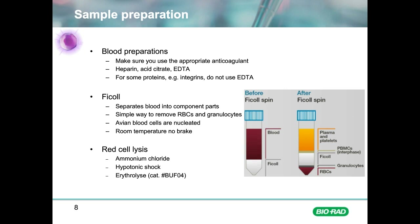The blood is diluted one-to-one with either PBS or RPMI and slowly layered on top of the Ficoll. This is then centrifuged to separate the different fractions. The red blood cells pass through the Ficoll due to their higher density, whereas mononuclear cells are trapped at the interface between the Ficoll and plasma. It should be noted that granulocytes will also pass through the Ficoll layer, so this is not suitable if granulocytes are the cell population of interest.